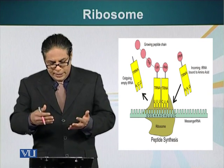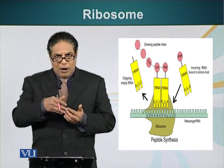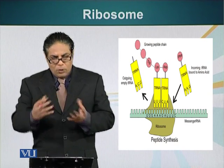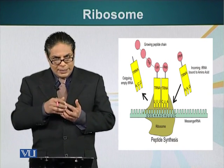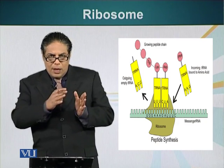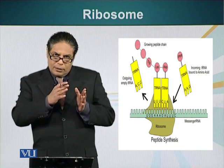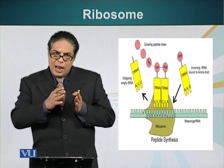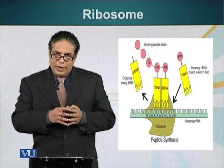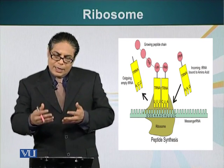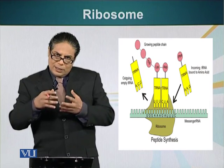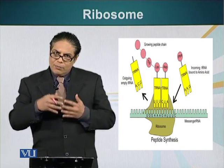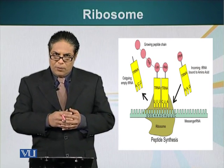These transfer RNAs sit on the messenger RNA. The small subunit checks the whole complex and checks the compatibility. We have talked about the nucleotides — A, G, C, and T nucleotides; in the case of RNA, T is replaced by U. This complex checks whether these nucleotides are maintaining and following the rule of complementarity.